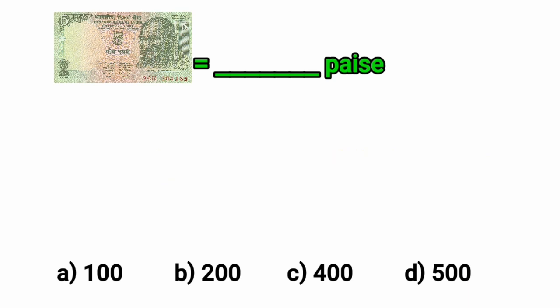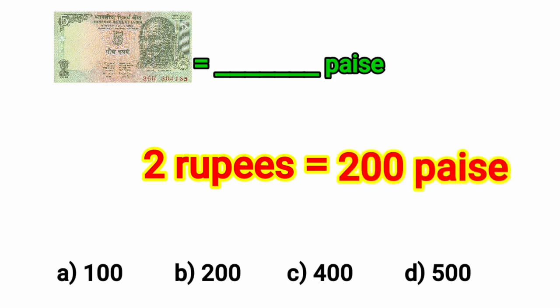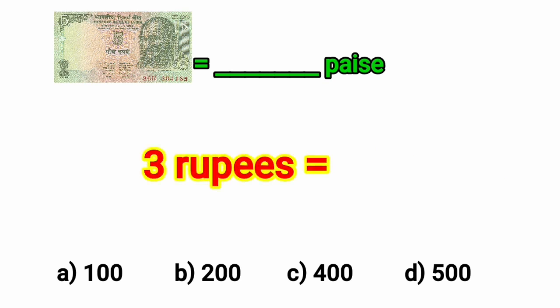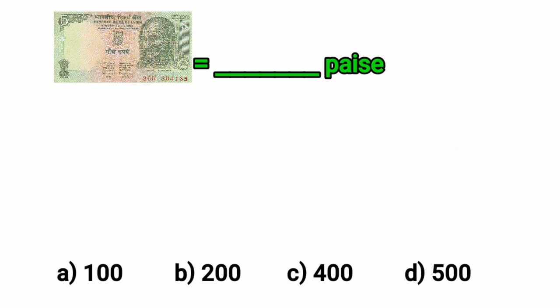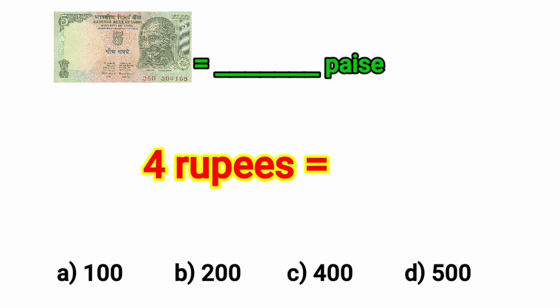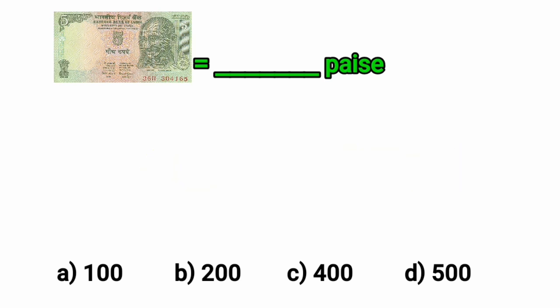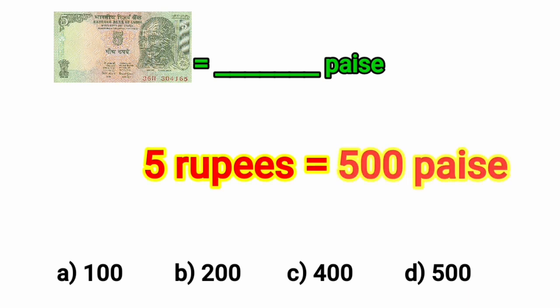Likewise, in 2 rupees there are 200 paise. 2 rupees is equal to 200 paise. Similarly, in 3 rupees we have 300 paise. For 4 rupees we get 400 paise. 4 rupees is equal to 400 paise. Likewise, 5 rupees is equal to 500 paise. Option D has 500, so we will put a tick at option D.